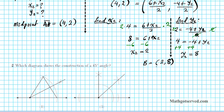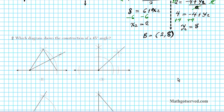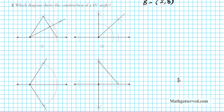Let's move on to question number 2. Number 2 is testing our ability to construct an angle. It says: which diagram shows the construction of a 45-degree angle? The question is: how do you construct a 45-degree angle? First, you start with a straight line and pick a point on the line.